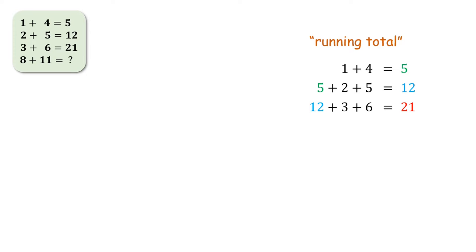We can try extending this running total interpretation. If you observe carefully the first numbers are 1, 2 and 3. They are in a sequence right. Similarly the second numbers are also 4, 5 and 6. They are also in a sequence. Following this sequence the first number in the next line should be 4 and the second number should be equal to 7. So therefore the next line should be 4 plus 7.